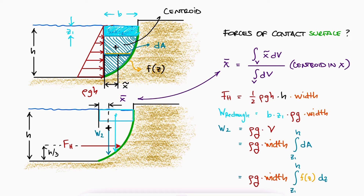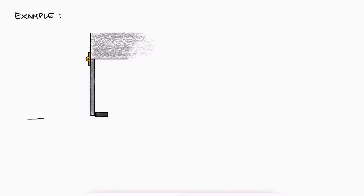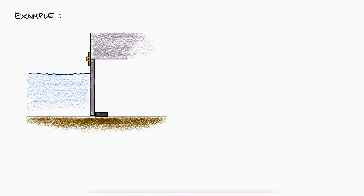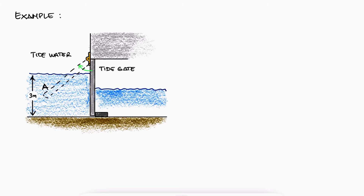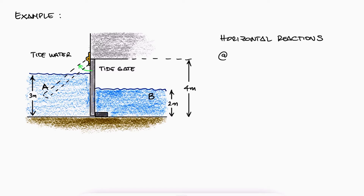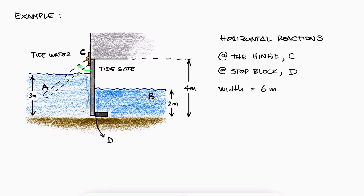Let's take a look at a simple example. For more complex problems, check out the two-minute video examples linked in the description. When the tide water A subsides, the tide gate automatically swings open to drain marsh B. For this specific condition of high tide shown, what are the horizontal reactions developed at the hinge C and the stop block D? The width of the gate is 6 meters and the water density is 1000 kilograms per cubic meter.